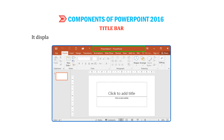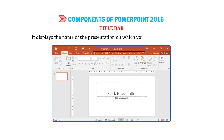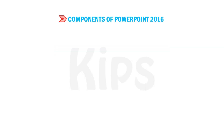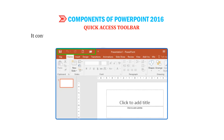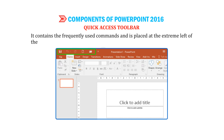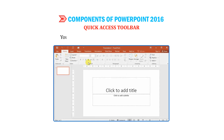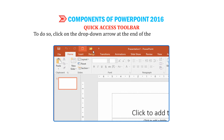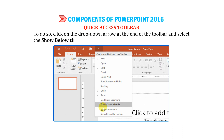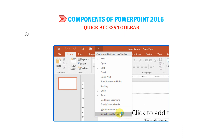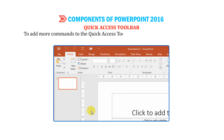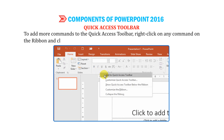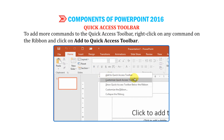Title Bar: It displays the name of the presentation on which you are currently working. Quick Access Toolbar: It contains the frequently used commands and is placed at the extreme left of the title bar. You can also place this toolbar below the ribbon. To do so, click on the drop-down arrow at the end of the toolbar and select the Show Below the Ribbon option. To add more commands to the Quick Access Toolbar, right-click on any command on the ribbon and click on Add to Quick Access Toolbar.